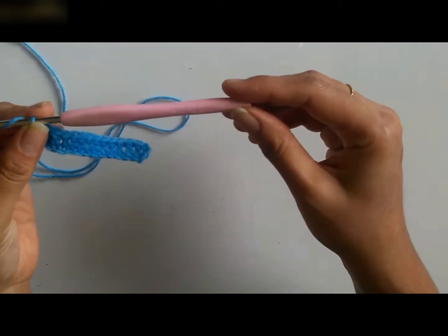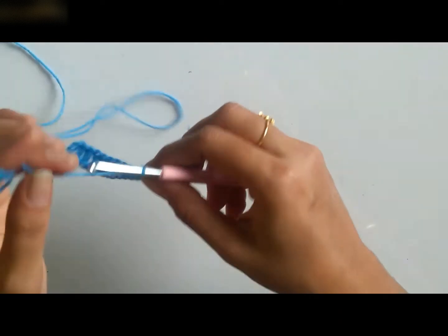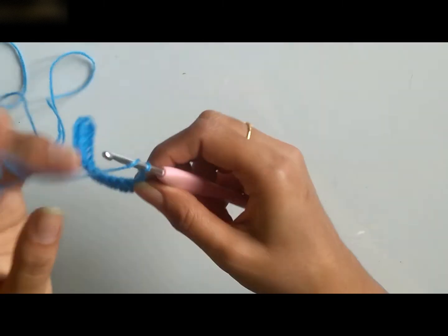I have taken a 4mm hook for this. I have chained three. This will act as my first double crochet.